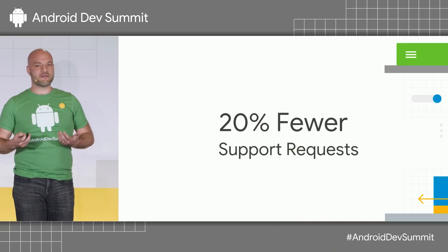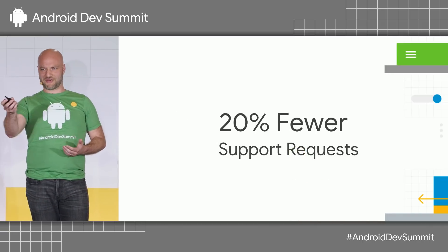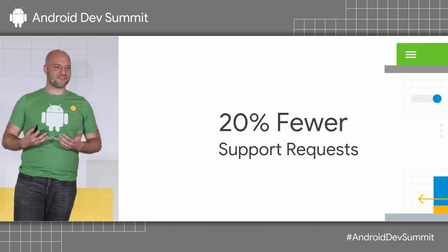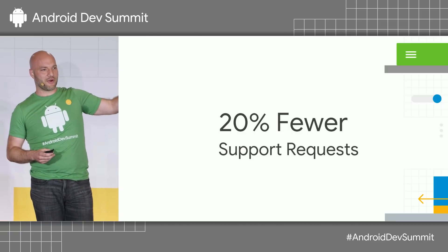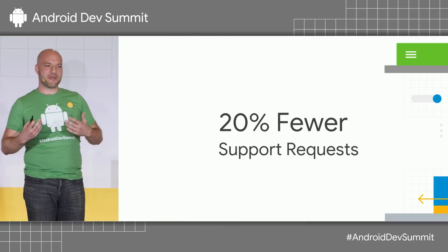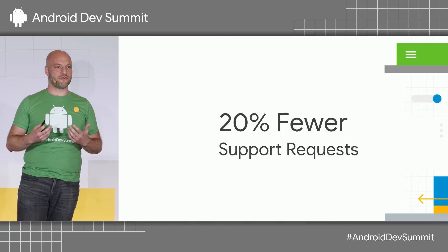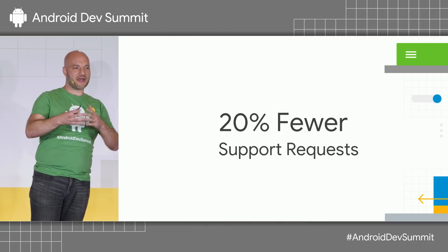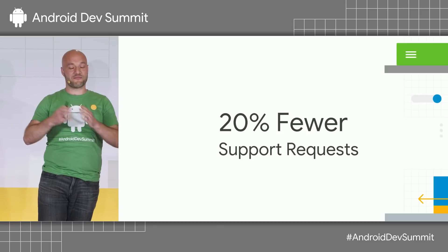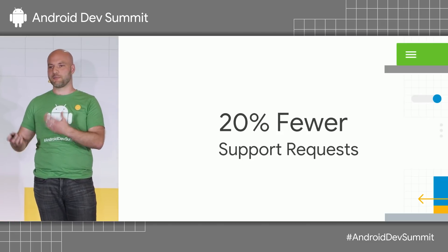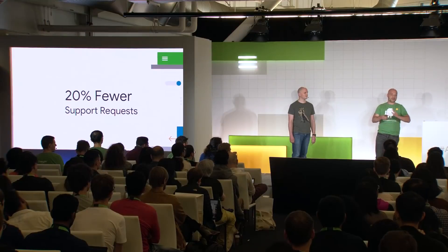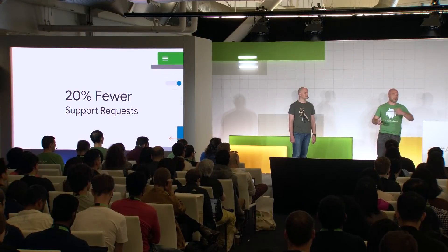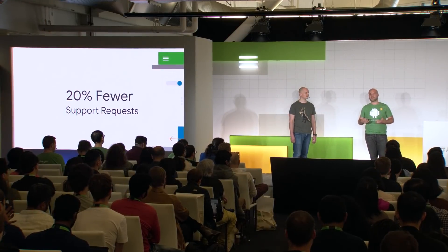One of our partners, Netflix, who I believe is here today, used this and found they had 20% fewer support requests. If you think about that, for every user who contacts you to get a username and password fixed, there are probably five users who didn't — and they're just not going to come back to your application for months or even years. They may become a retention problem and never come back. So this is a fantastic way to improve your business metrics.